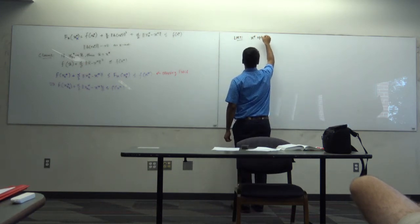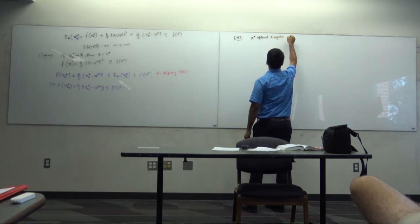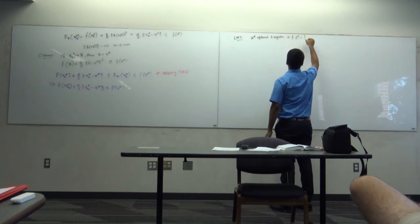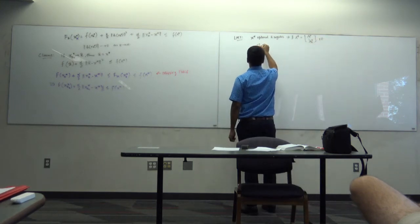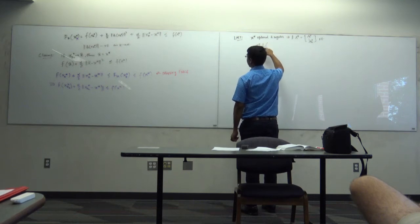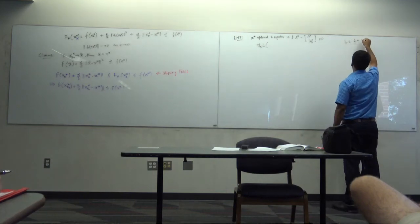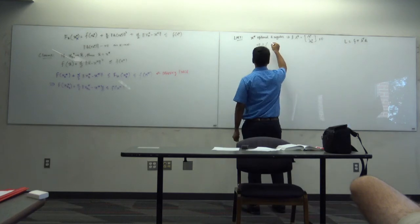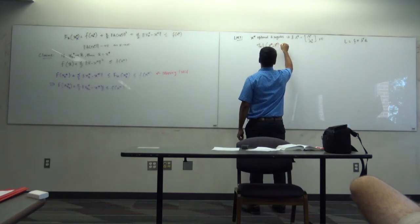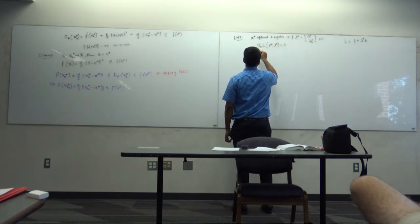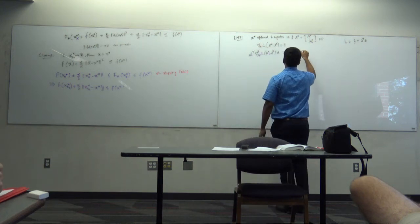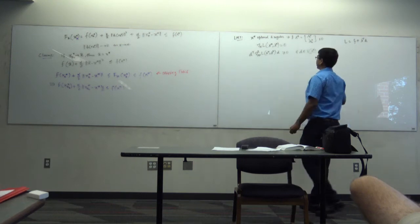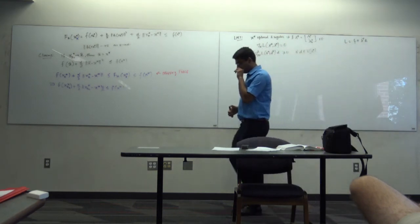Let me write the Lagrange multiplier theorem again. X* optimal and regular implies there exists lambda* = (λ₁*, …, λᵣ*) such that the gradient of the Lagrangian is zero, where the Lagrangian L = F + λᵀH. And D^T ∇²L(x*, λ*) D ≥ 0 for all D in V(x*). This was the Lagrange multiplier theorem.